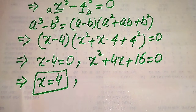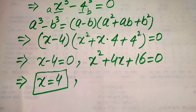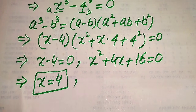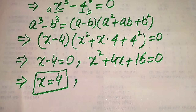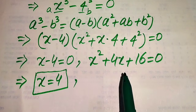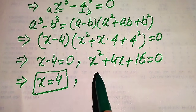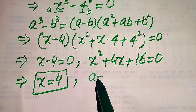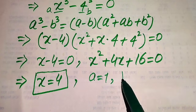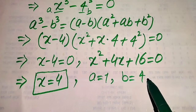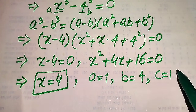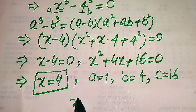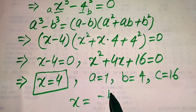To find the other roots, we need to solve the quadratic equation x² + 4x + 16 = 0. There are three methods: factorization, completing the square, and the quadratic formula. Here we use the quadratic formula. The coefficients of this equation are a = 1, b = 4, and c = 16.